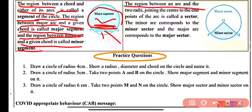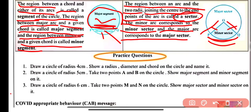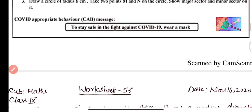The region between an arc and the two radii OP and OQ joining the center to the endpoints of the arc is known as a sector. The minor arc corresponds to the minor sector, and the major arc corresponds to the major sector. The minor sector is formed by the radii and the corresponding minor arc, and the major sector is formed by the corresponding major arc and the radii.